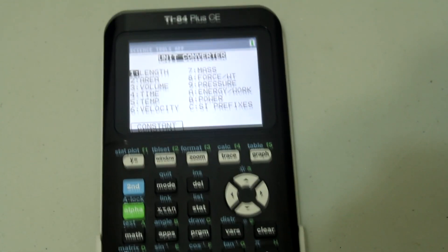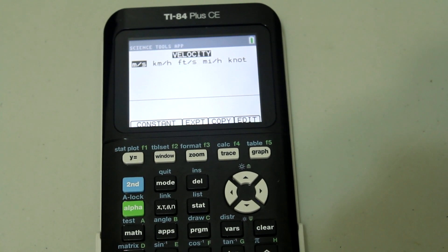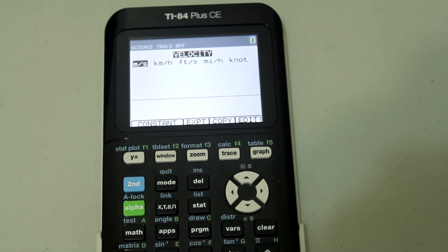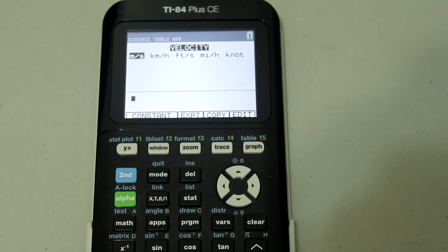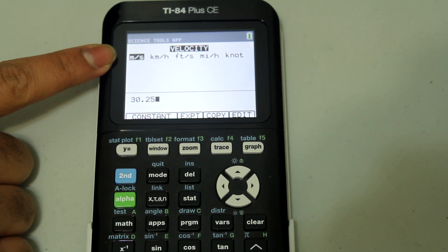So let's do a simple conversion. Let's hit 6 for velocity and let's convert meters per second to miles per hour. First type in the quantity that you want to convert. So let's say 30.25 meters per second, so type in 30.25 and then make sure that meters per second is selected.